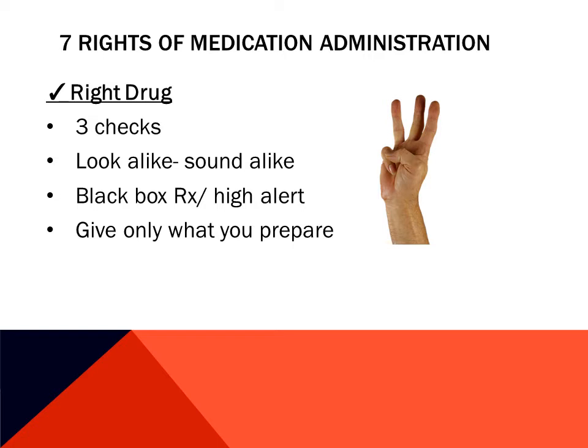Take caution with look-alike, sound-alike medications. A significant amount of errors happen because of this. Many facilities will have a look-alike, sound-alike list posted in your medication room to help you stay aware and to stay safe. An example would be Oxycontin and Oxybutrin — this would be a huge error if these medications were mixed up. Oxycontin is an opiate for severe pain, and Oxybutrin is an anticholinergic for an overactive bladder.